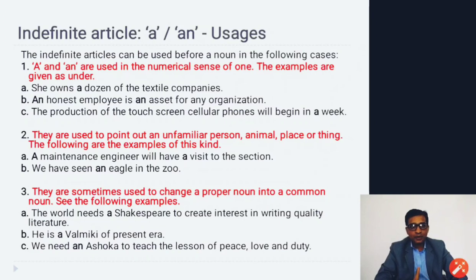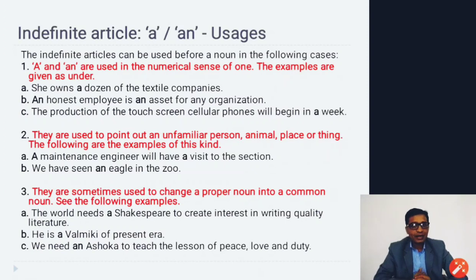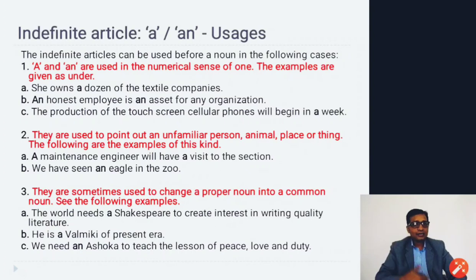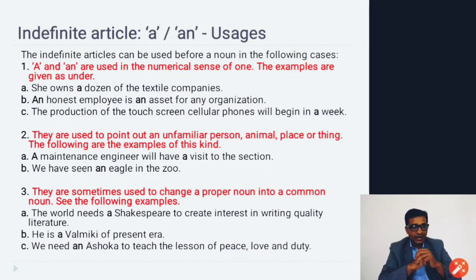When we want to speak about something unfamiliar or unknown to us, we use 'a' or 'an' before that person or place. The thing we are speaking about is not specific. When it is specific, known, or familiar, we use 'the'. In the examples above, we are not talking about any specific eagle or specific maintenance engineer — we are using them in a general sense, so we place the indefinite article before them.